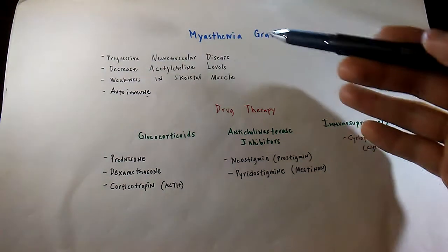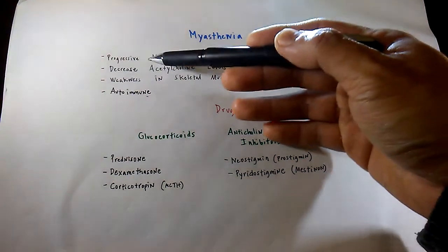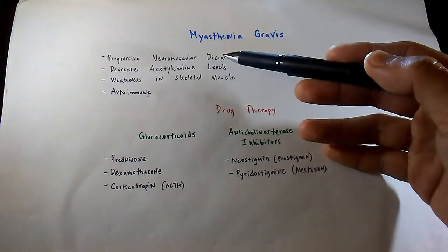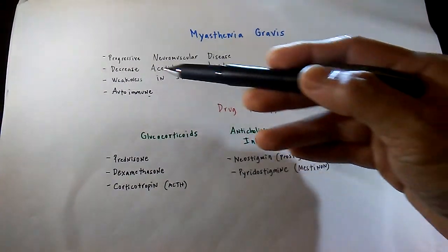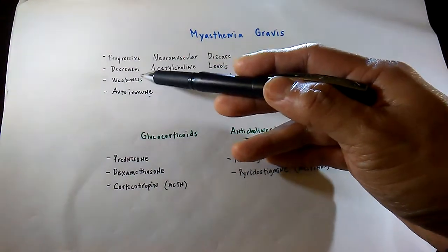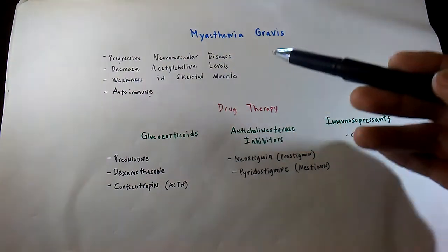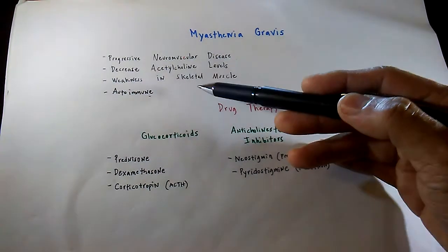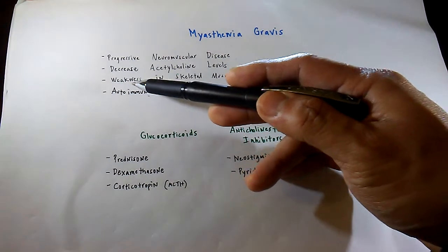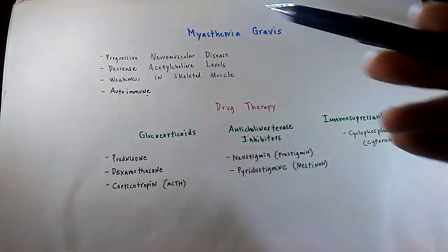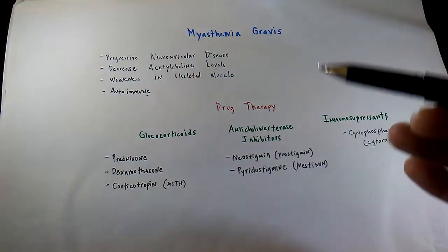Basically, myasthenia gravis is a progressive autoimmune neuromuscular disease, and it causes a decrease in the acetylcholine levels, which will eventually cause weakness in the skeletal muscles.